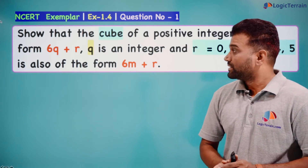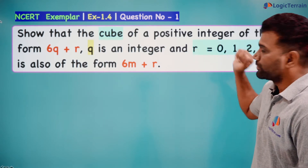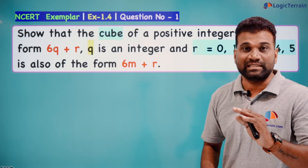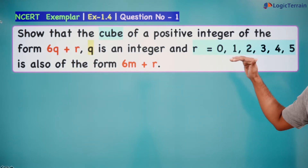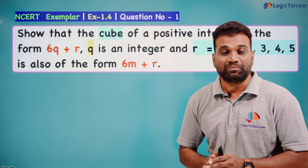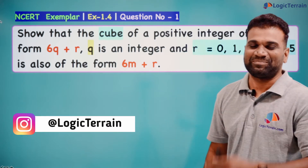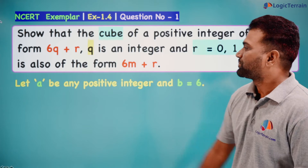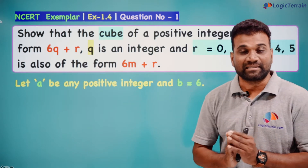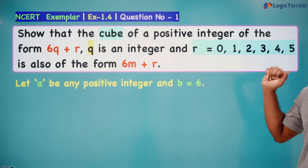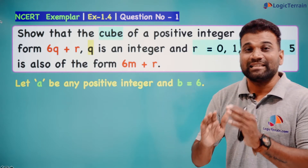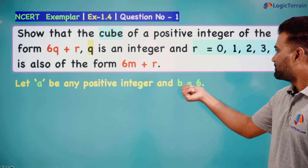We need to show that the cube of a positive integer is of this form. Let us assume a positive integer a of the form 6q + r, where q is the quotient and r is the remainder. We will use Euclid's Division Lemma. For that, let us take any positive integer a and b equals 6, where a is the dividend and b is the divisor. The r values are 0 to 5, which are less than 6, so b must be 6, since the remainder is always less than the divisor.